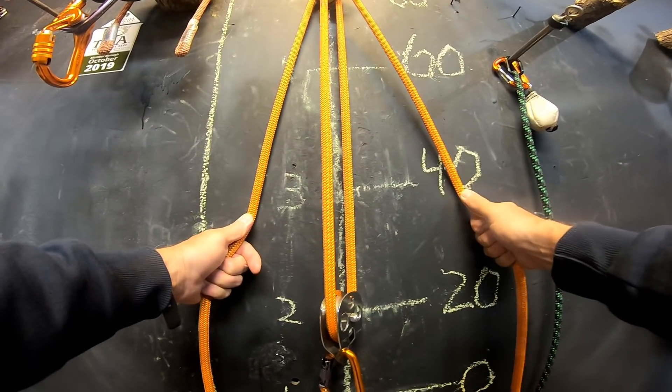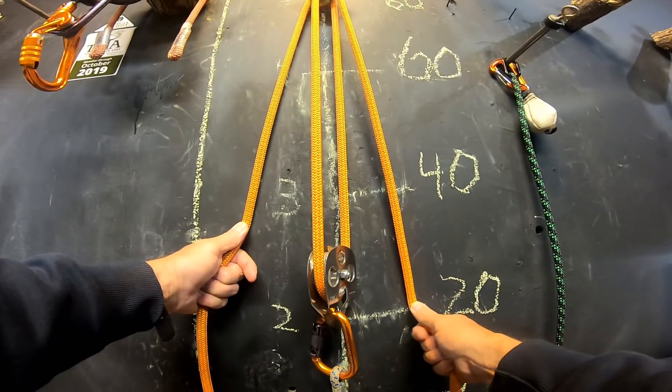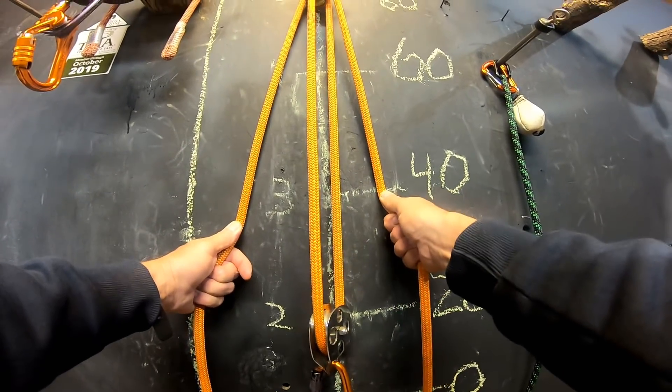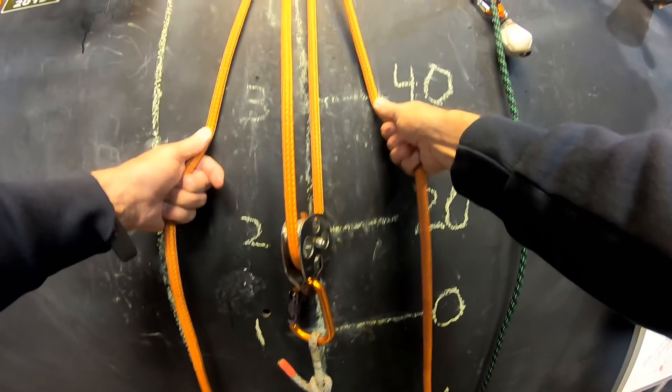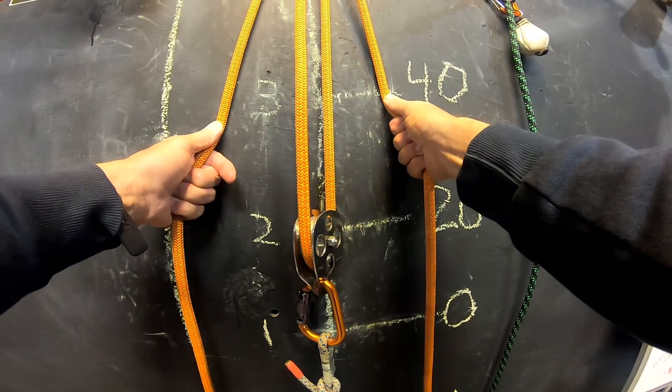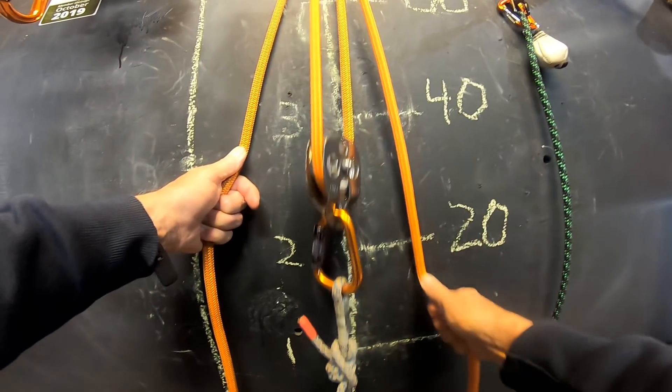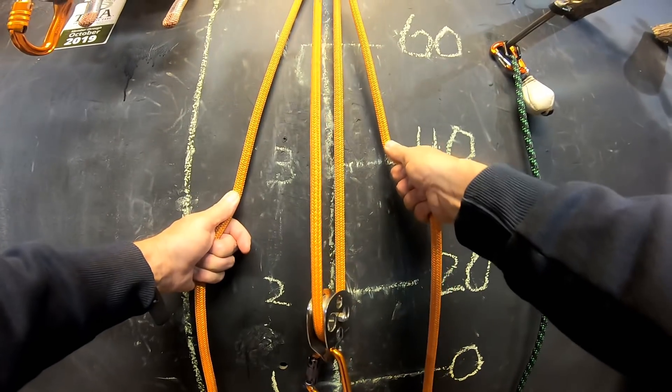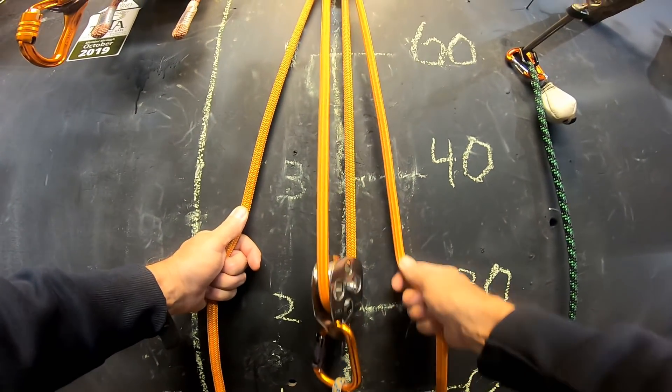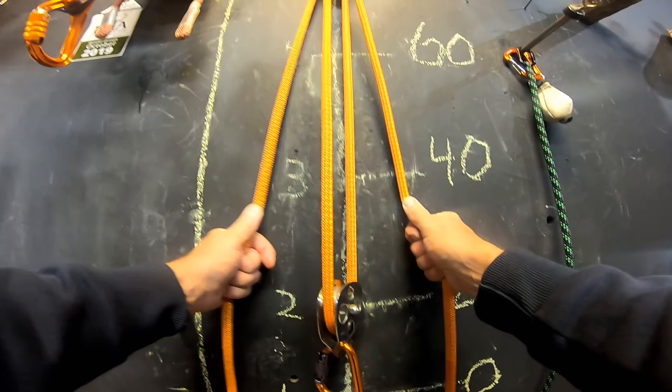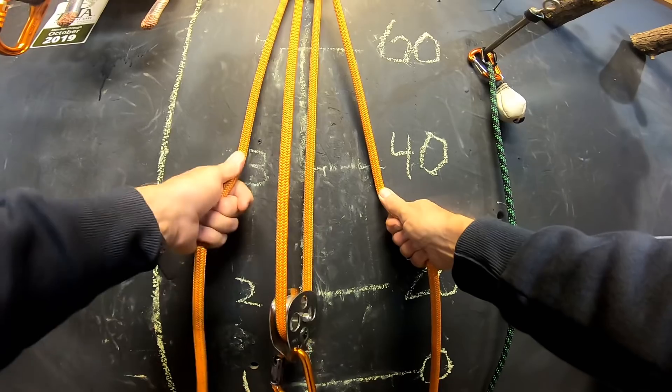And so when this guy pulls down right here, that only goes up halfway. In order to get that to go up one full deal, I've got to go two. So it's a two-to-one mechanical advantage. Same thing with the other side, the other guy. It's a two-to-one mechanical advantage.